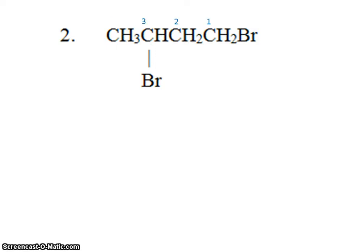1, 2, 3, 4. This is butane. And we have 2 bromines. We have 1 bromine located on the first carbon, and we have another bromine located on the third carbon. So we have 2 bromines. That's dibromo. So the name of this compound would be 1, 3-dibromobutane.